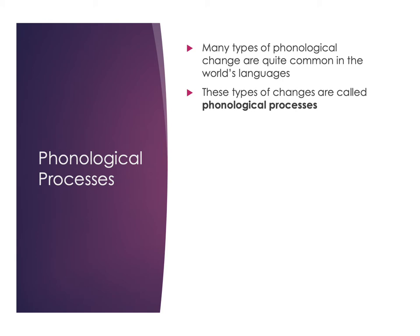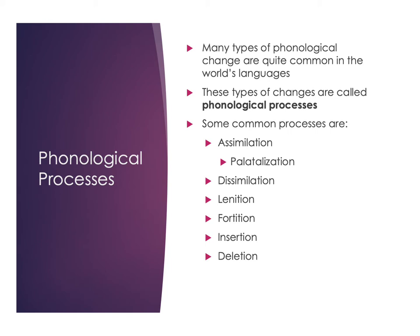We'll look at the most common ones in this class, and your book outlines several others in addition to that. There are many types of change very common in the world's languages — things that happen naturally as we're moving from sound to sound in our mouths — that lead to phoneme and allophone variation. The most common ones we'll talk about are assimilation and palatalization, dissimilation, lenition and fortition, and insertion and deletion.